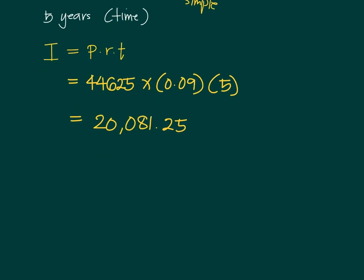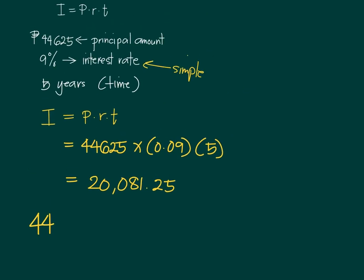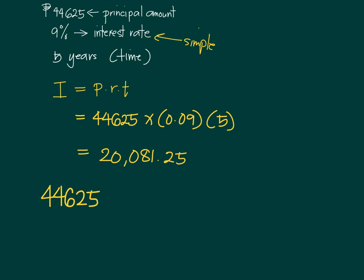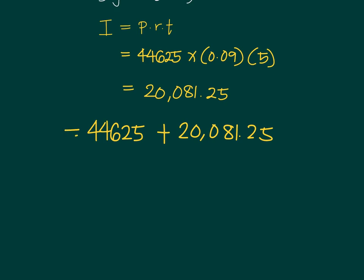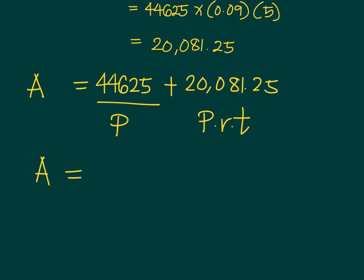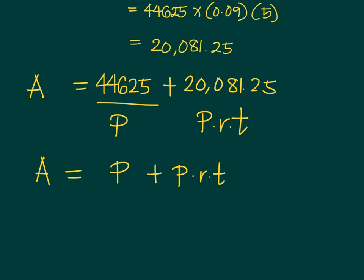Note that $20,081.25 is not your original money — this is the interest. You invested $44,625, so after five years you get an additional $20,081.25 as interest. The total amount after five years is the principal amount plus the interest you gained, which can be written as P plus P times R times T.